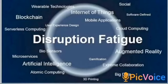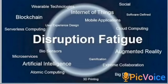Disruption Fatigue includes various forms similar to the examples and stages of technology disruption, such as variable technologies, blockchain, user experience design, internet of things, mobile applications, cloud computing, software defined, social and biosensors, microservices, artificial intelligence, atomic computing, 3D printing, big data, extreme collaboration, gamification, and augmented reality.